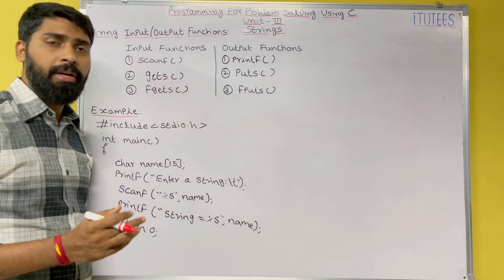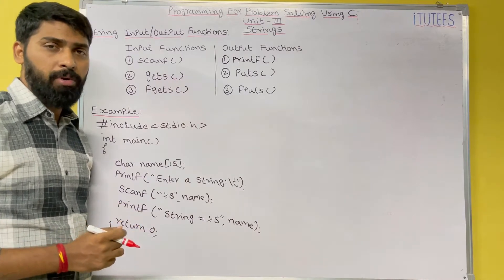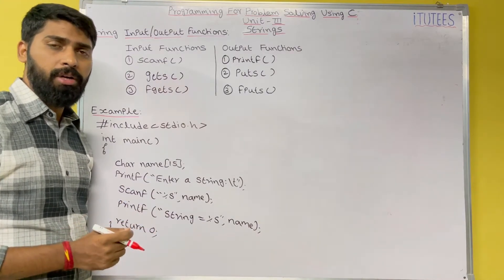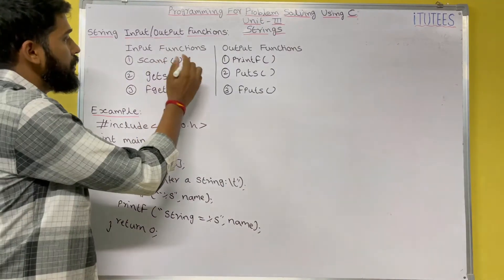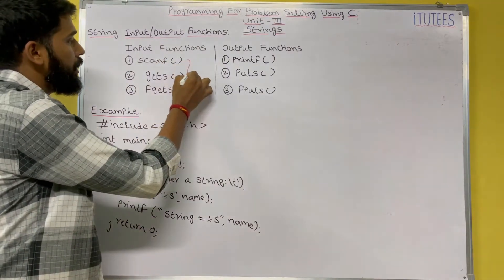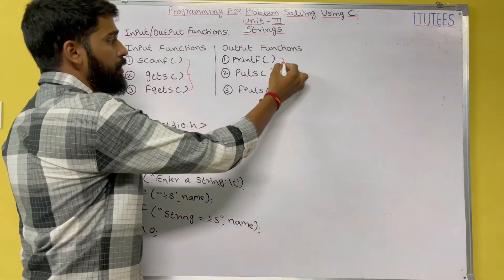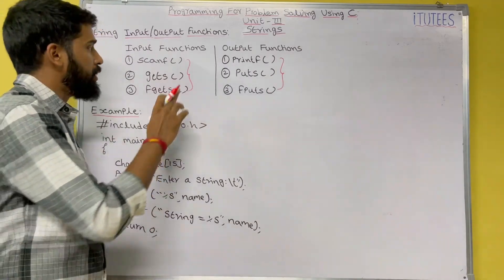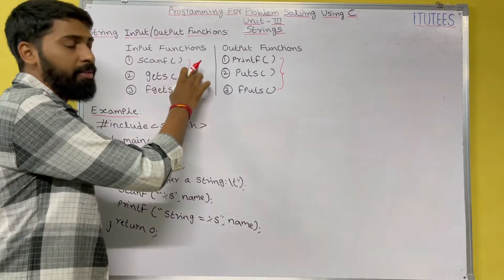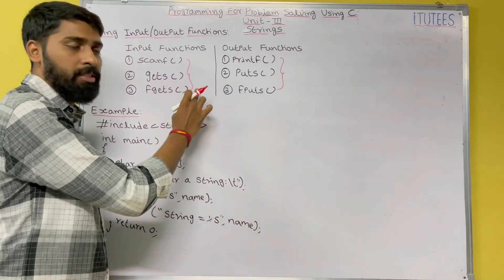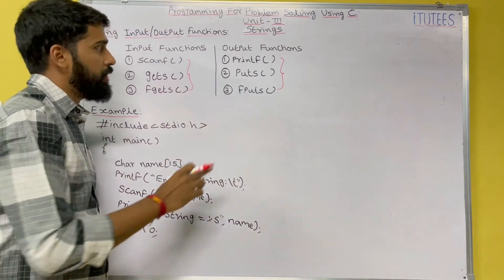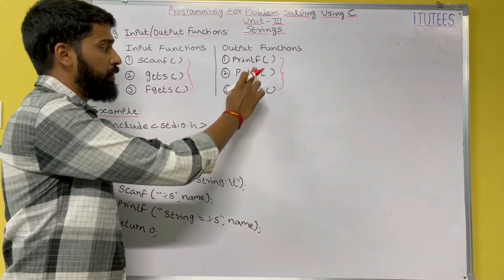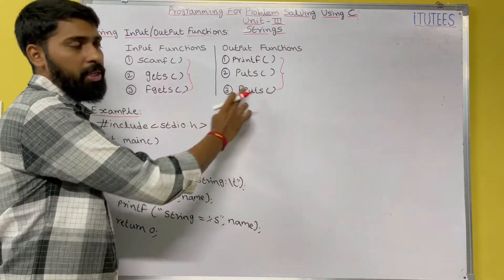How we can read the string from the keyboard, and how we are going to print string onto the monitor. These three are the input functions and these three are the output functions. The first input function is scanf, second one is gets, third one is fgets. Coming to output functions: printf, puts, fputs.